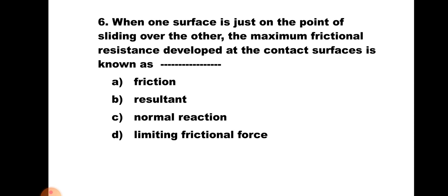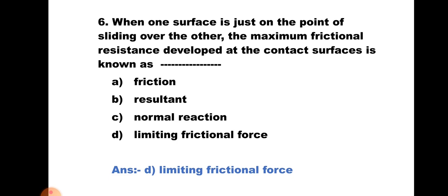Question number six: When one surface is just on the point of sliding over the other, the maximum frictional resistance developed at the contact surfaces is known as — a) Friction, b) Resultant, c) Normal reaction, and d) Limiting frictional force. The maximum force developed between two surfaces in contact when one is about to move over the other, at limiting equilibrium, is known as limiting frictional force. Hence the correct answer is d) Limiting frictional force.